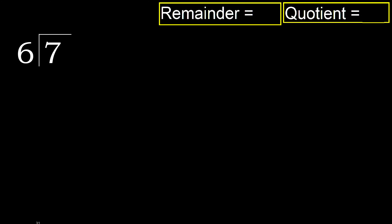7 divided by 6. 7 is not less, therefore work with 7. 6 multiplied by which number is nearest to 7 but not greater? 6 multiplied by 2 is 12 — 12 is greater. Multiply by 1 is 6, which is not greater.